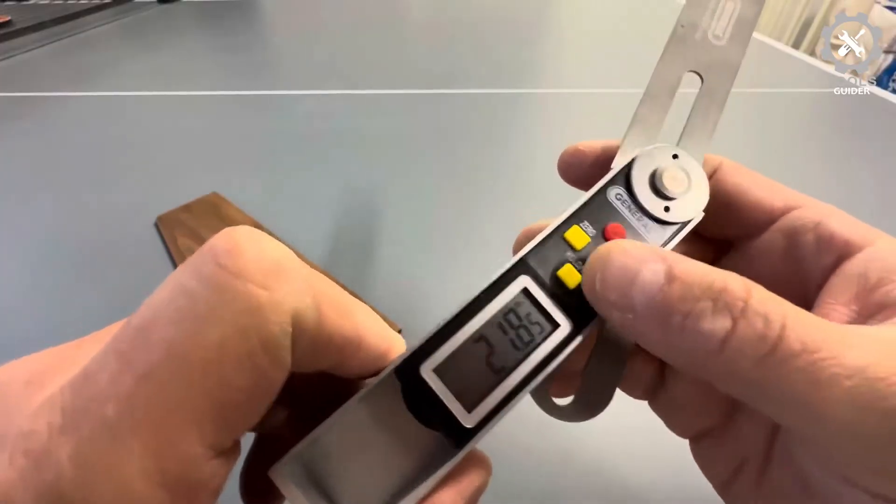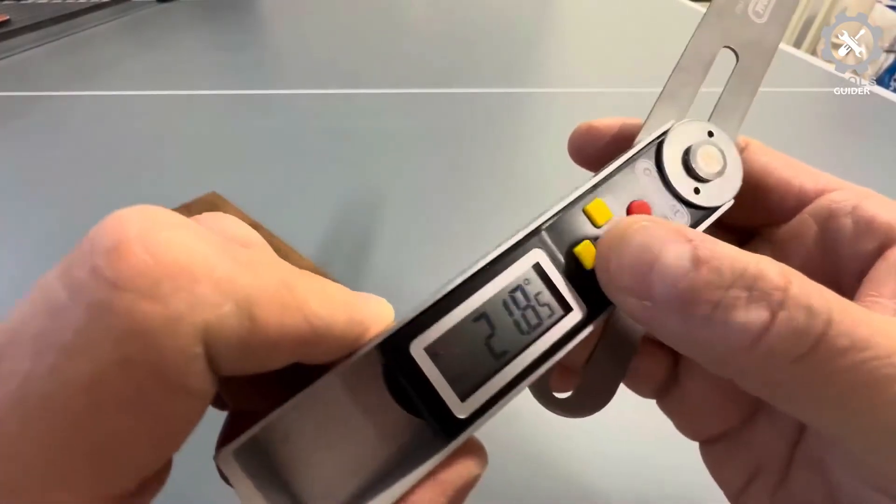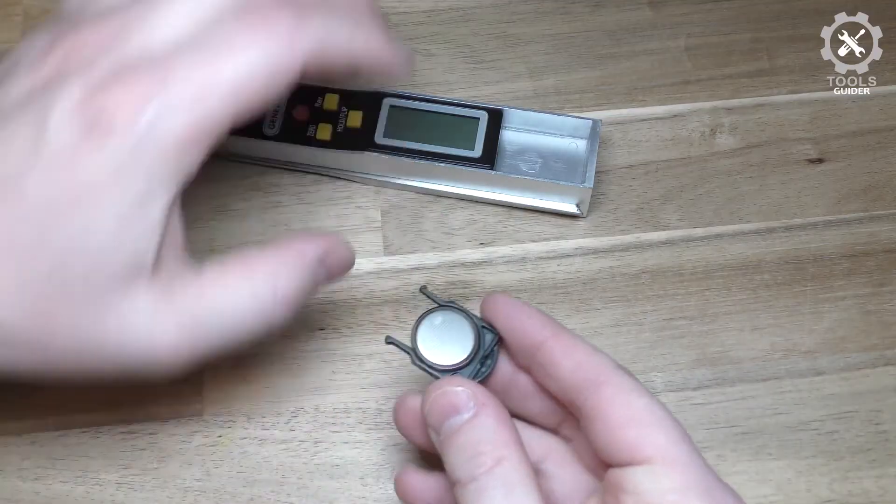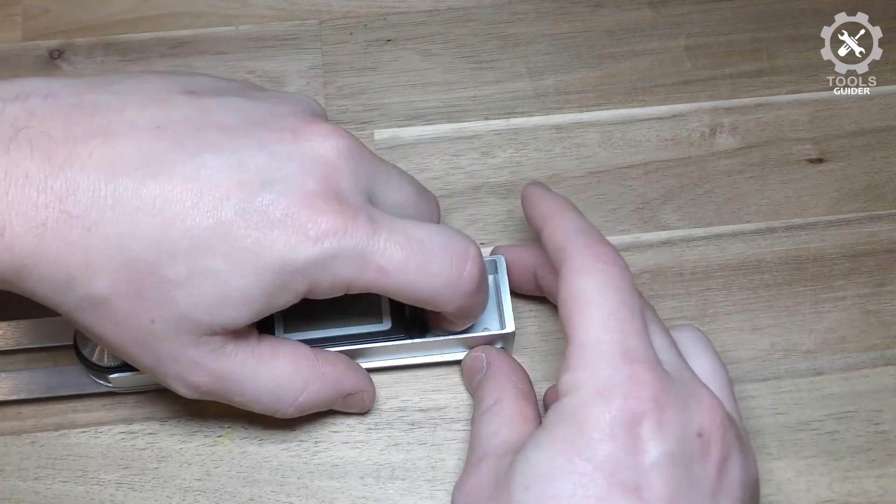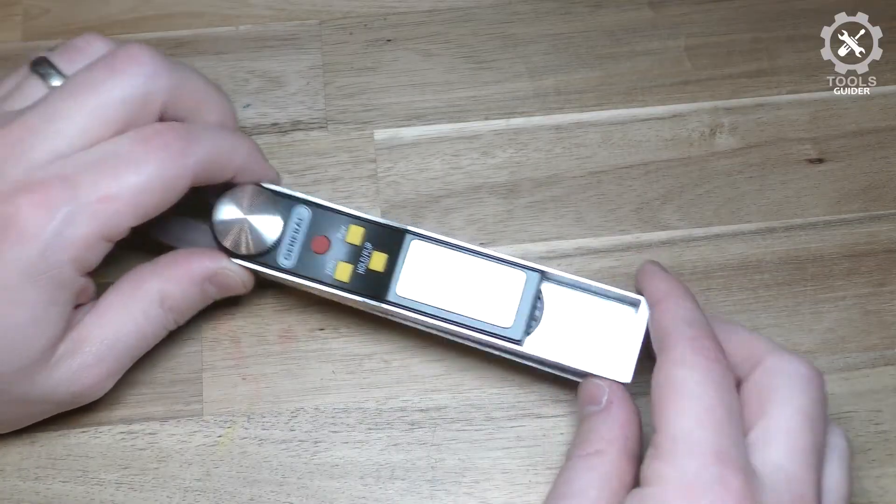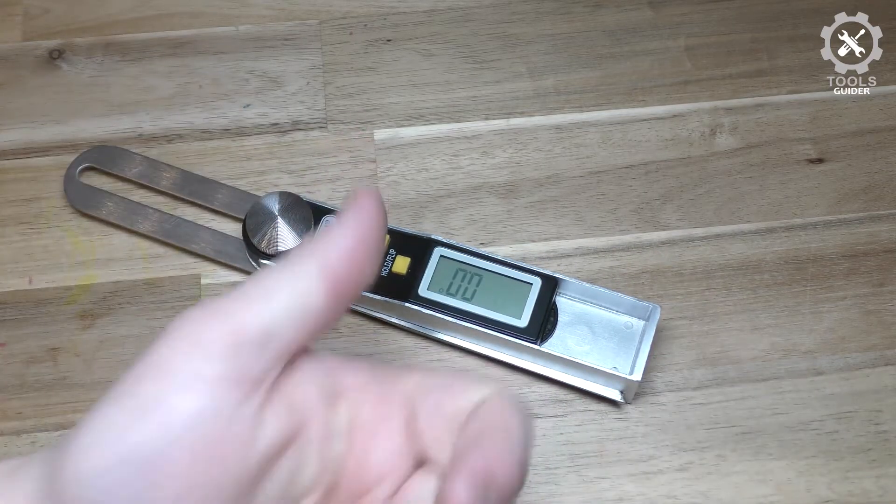The reverse angle function can also be used for the user's convenience. It allows drawing both inner and outer angles with ease. The device allows you to work 360 degrees with great zero points and 3 degrees accuracy.